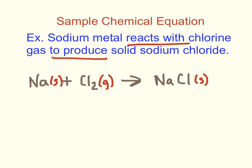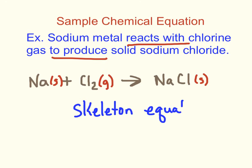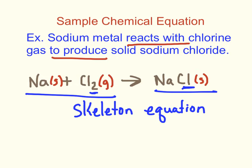What we've just written is called a skeleton equation. The reason it's called a skeleton equation is because it's not a balanced chemical equation, which we'll get to a little bit later. It is just saying these are the reactants and this is the product. You may notice there are two chlorines on the left and only one on the right — we'll take care of that later. Just trust me on that one.